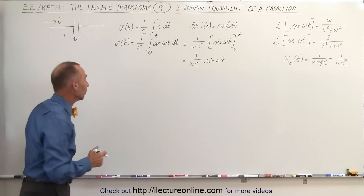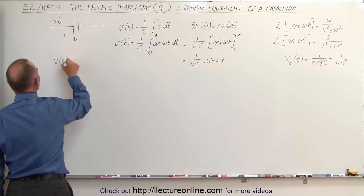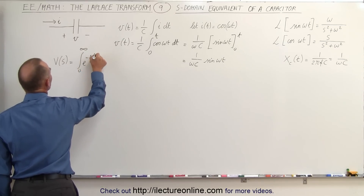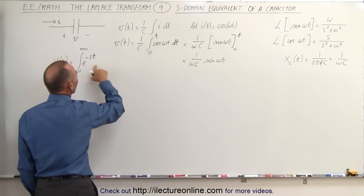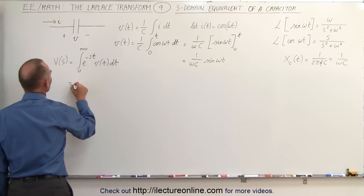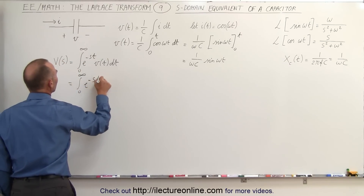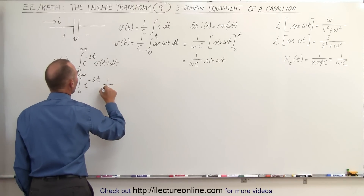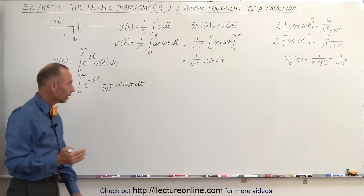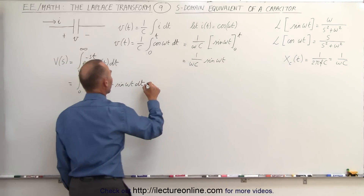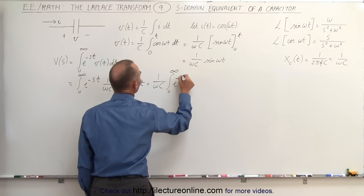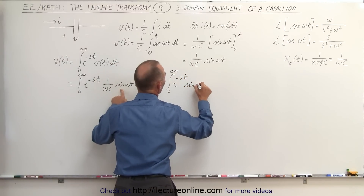Now we want to find the Laplace transform. The voltage in the frequency domain V(s) is equal to the integral from 0 to infinity of e to the minus st times v of t dt. In this case that's equal to the integral from 0 to infinity of e to the minus st times 1 over omega C times the sine of omega t dt. We can take the 1 over omega C outside the integral, giving us 1 over omega C times the integral from 0 to infinity of e to the minus st times the sine of omega t dt.